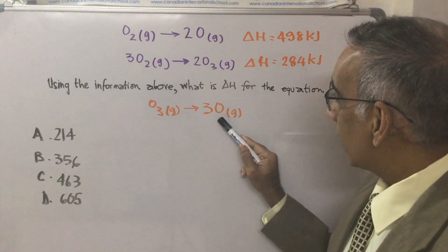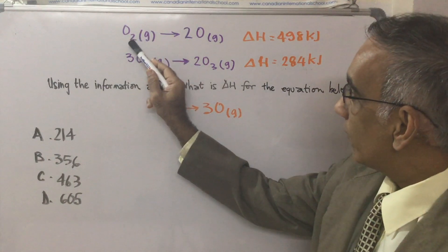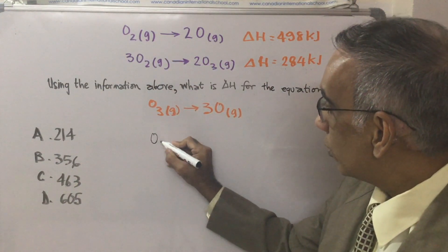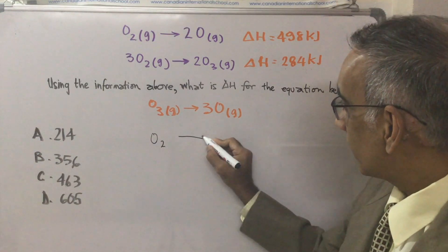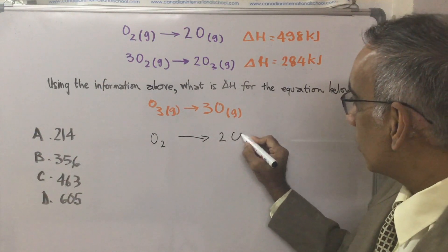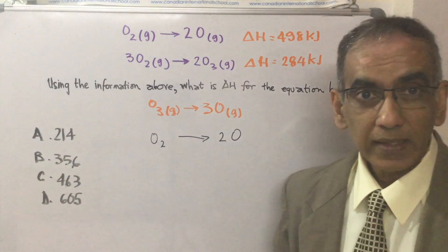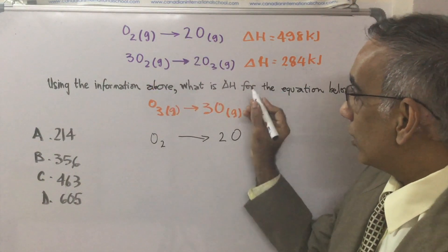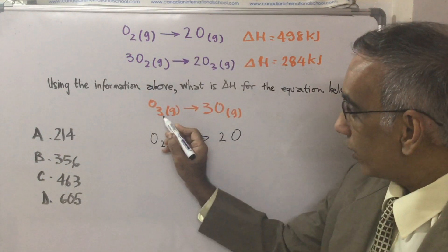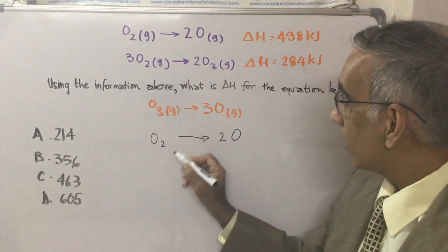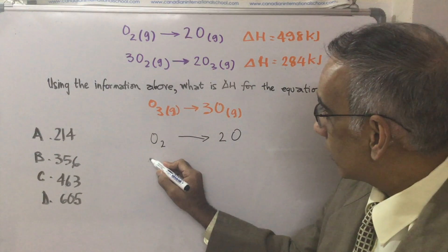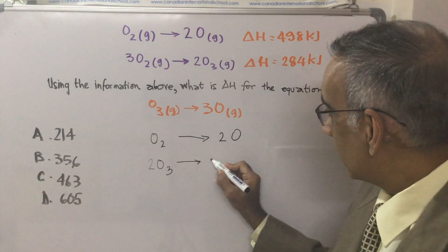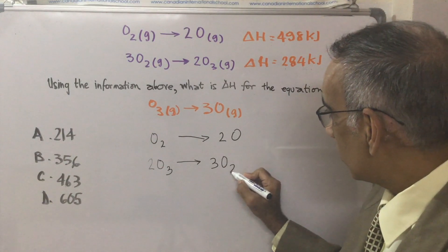You want to end up with oxygen here as a product. So you want to leave this equation as it is. O₂ to give two O's. You want to leave that as it is. But this equation here at the bottom, you want to reverse that because you want to get O₃ over on this side here. So you put two O₃ to give three O₂.